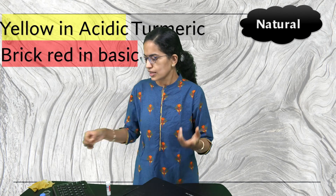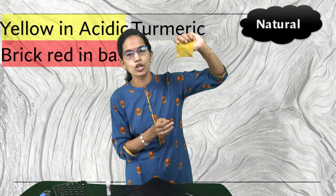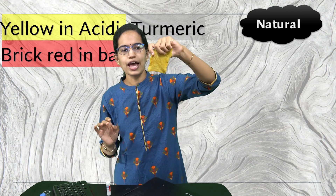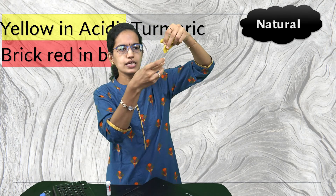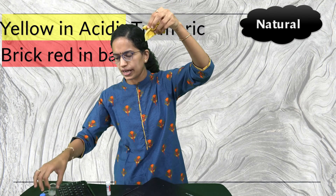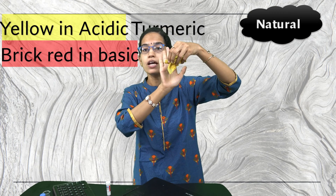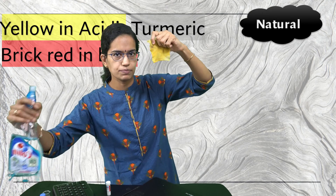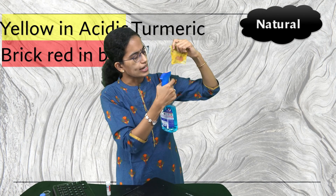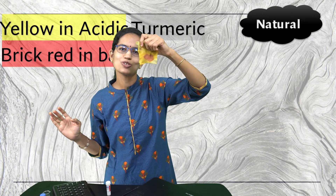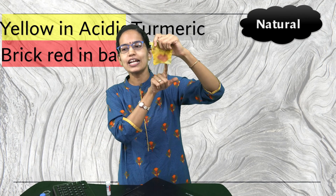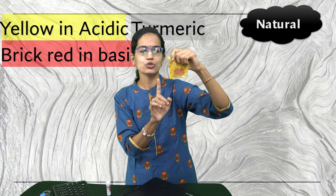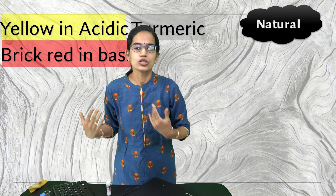The next natural indicator is turmeric. I have a cloth dipped in turmeric water, which is yellow in color. If I dip this cloth in lemon juice, the color does not change — it remains yellow. Turmeric in an acidic solution remains the same yellow color. However, when I spray window cleaner — a base — on the turmeric cloth, the color changes to brick red, indicating the window cleaner is a basic solution.